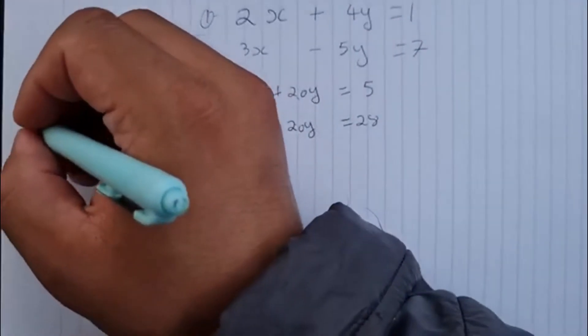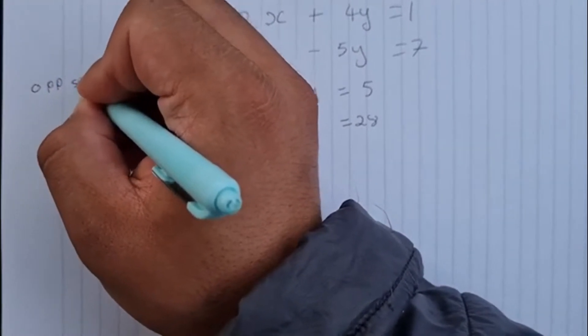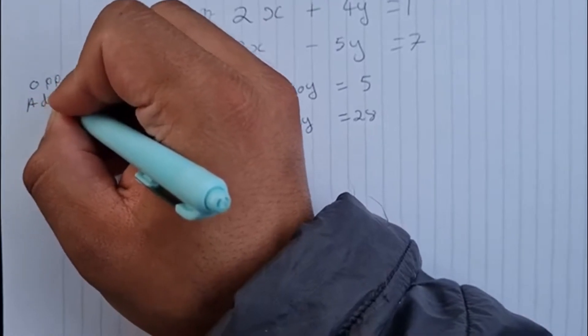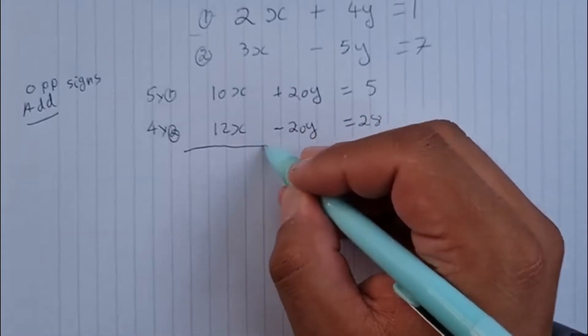Because we have opposite signs, that means we have to add the equations. Okay? Because that will actually cancel out the y's. So let's go ahead and do that.